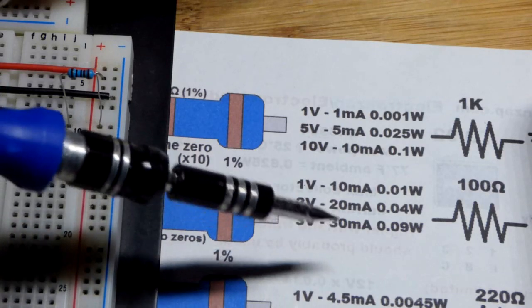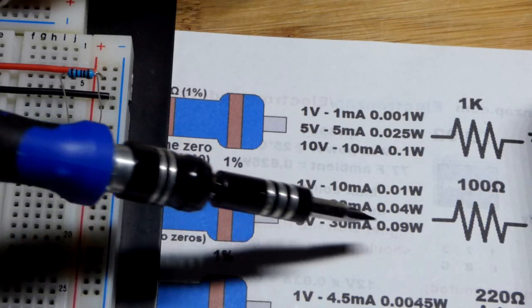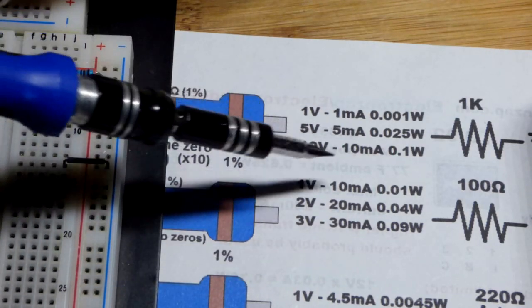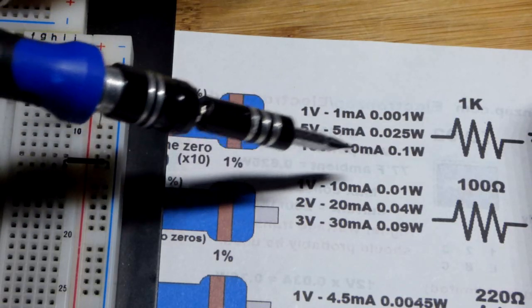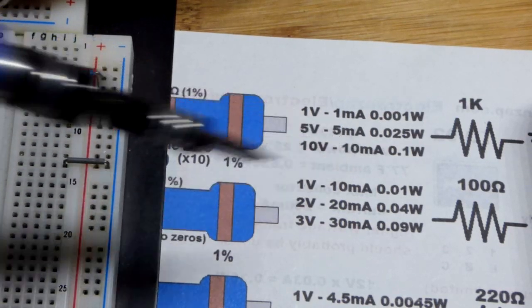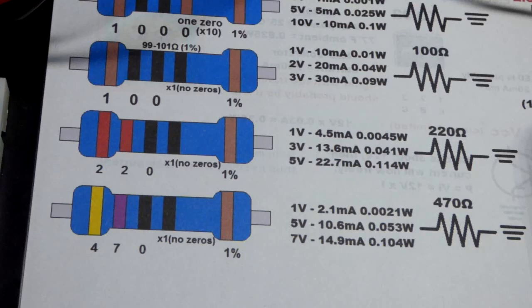So, the 100 ohm resistor, we had to stop at 3 volts. But, we had a lot more current. Whereas, the 1,000 ohms, we have a higher voltage. But, we have to limit the current more.